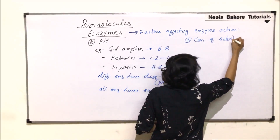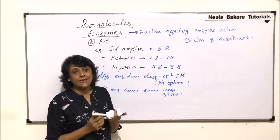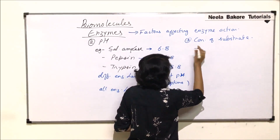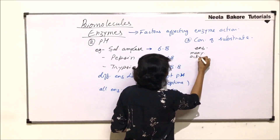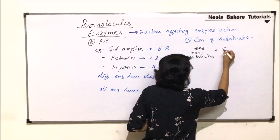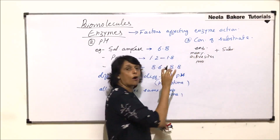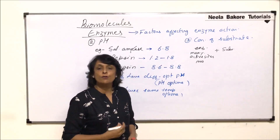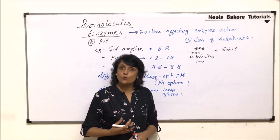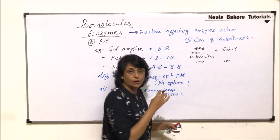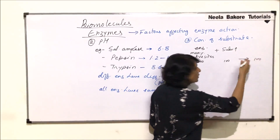This is the second factor. Now the third factor is concentration of substrate, also written as substrate concentration. To understand this, we'll take an example. An enzyme normally has many active sites — each enzyme molecule has many active sites. For example, say there are one thousand active sites on one enzyme molecule, meaning there are one thousand places where substrate molecules can bind. As substrate concentration increases, we observe how the rate of reaction changes.